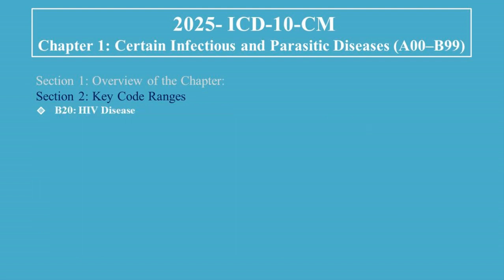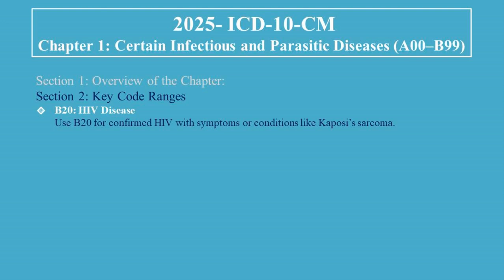B20 covers HIV Disease, which is one of the most important codes. Use B20 for confirmed HIV with symptoms or conditions like Kaposi's sarcoma. Use Z21 for asymptomatic HIV.